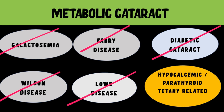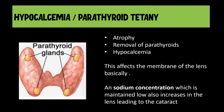The last metabolic condition that can lead to cataract is hypocalcemia. Hypocalcemia or parathyroid tetany basically occurs when there is atrophy of the parathyroid glands, or sometimes after thyroidectomy when parathyroids are removed along with the thyroid. Calcium levels in the aqueous are very important to maintain lens health and particularly the lens membrane. As there is hypocalcemia, the lens membrane gets affected, disrupting transport across it. Sodium concentration within the lens increases, water follows sodium, causing hydration and ultimately cataract.